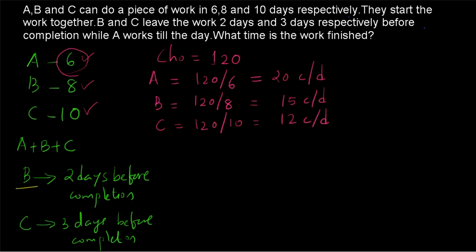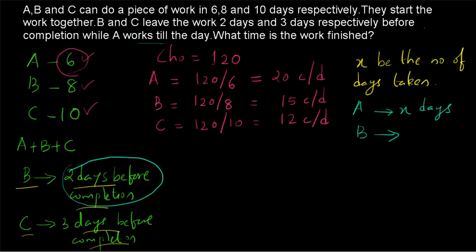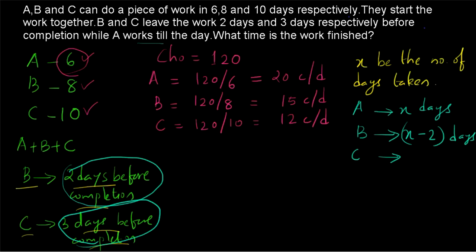It is given B is leaving the work 2 days before completion and C is leaving the work 3 days before completion. We don't know how many days are taken for completion — that is what we have to find out. So let the number of days taken for work be equal to X. If X is the number of days taken, then A is working for X days because A is working till the end. B is leaving 2 days before completion, so B is working for X minus 2 days. C is leaving 3 days before completion, so C will be working for X minus 3 days.